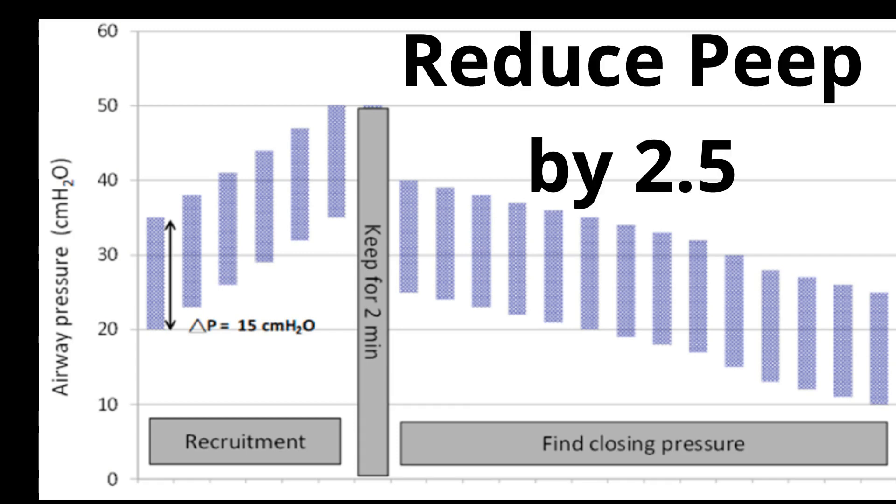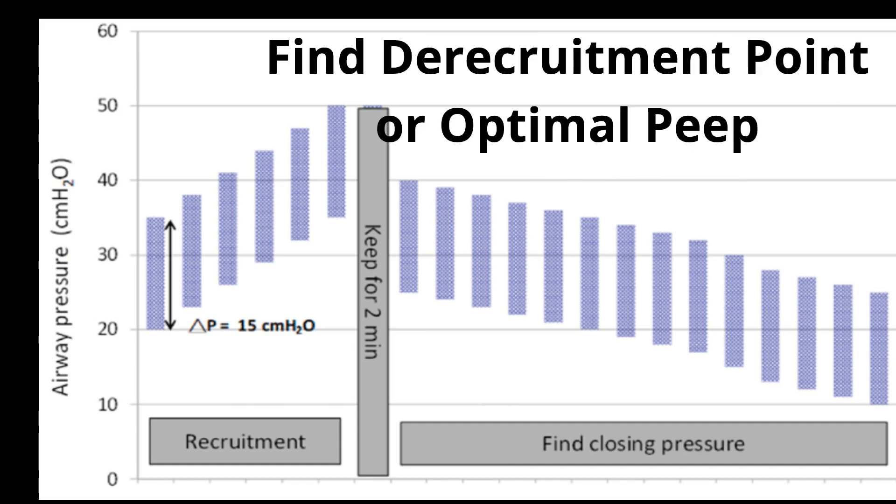Reduce PEEP to 25, then 22.5, then 20, then 17.5, or then an absolute minimum of 15 cm water every 3 minutes until a decrease in oxygen saturation is greater than or equal to 1% from maximum oxygen saturation as observed, the de-recruitment point.